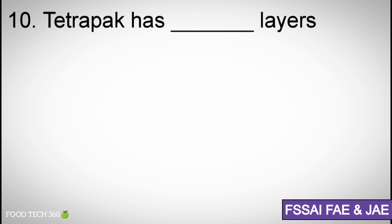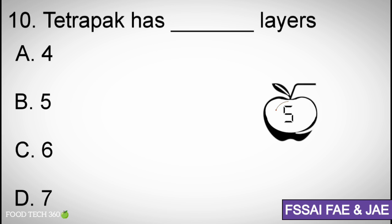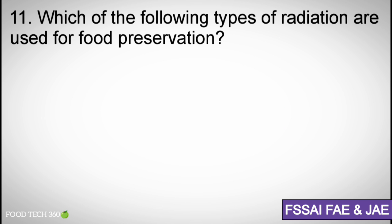Question number 10. Tetra Pak has how many layers? Options A. 4, B. 5, C. 6, D. 7. Correct answer C. 6.